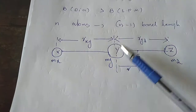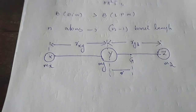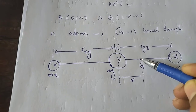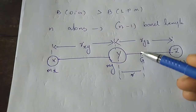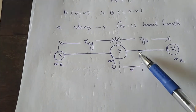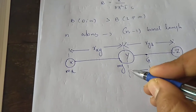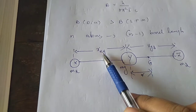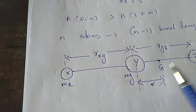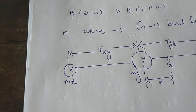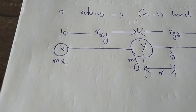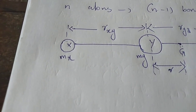In the OCS example, X is oxygen, Y is carbon, and Z is sulfur, with corresponding masses Mx, My, and Mz respectively. The center of gravity G of the total system is defined. The distances from each atom to the center of gravity are used — Rxy is the bond distance between X and Y, and Ryz between Y and Z.